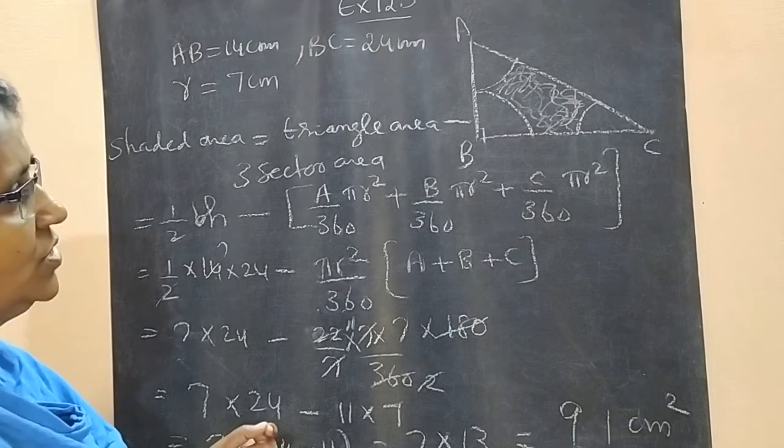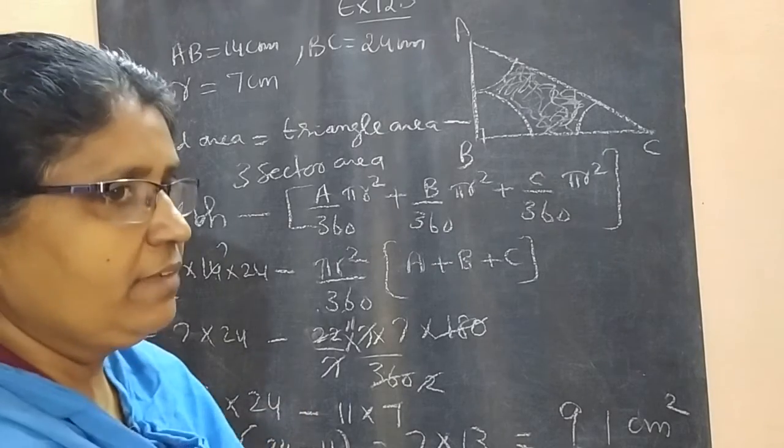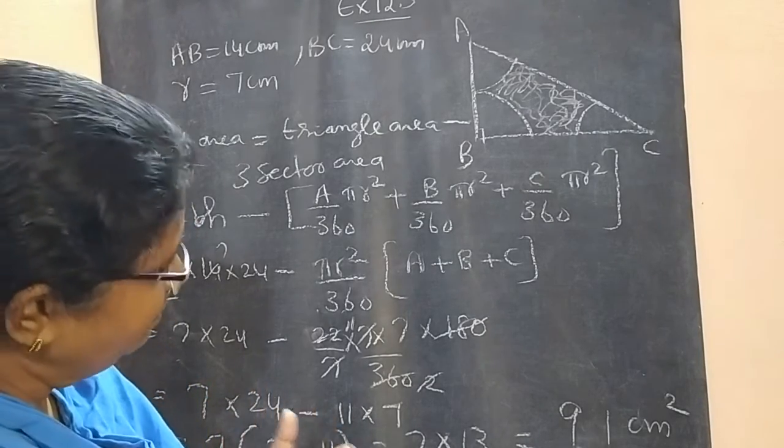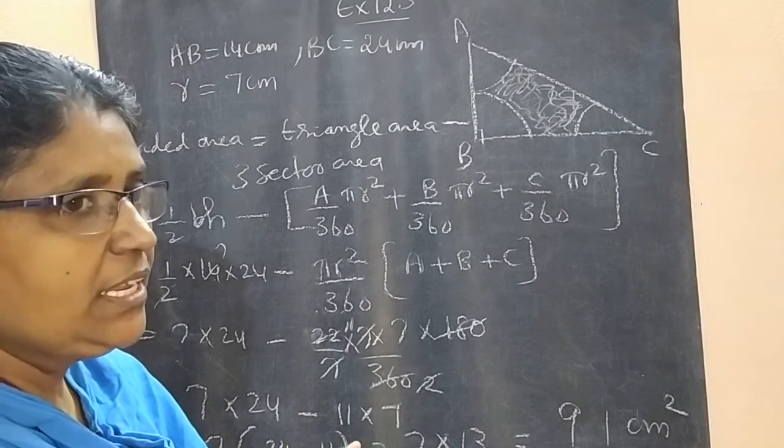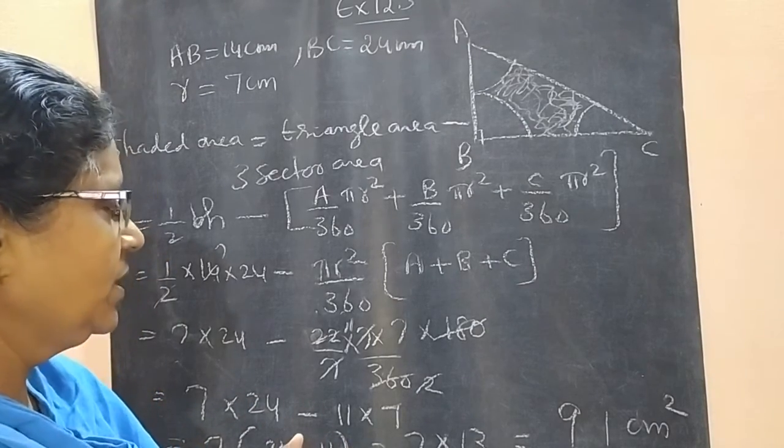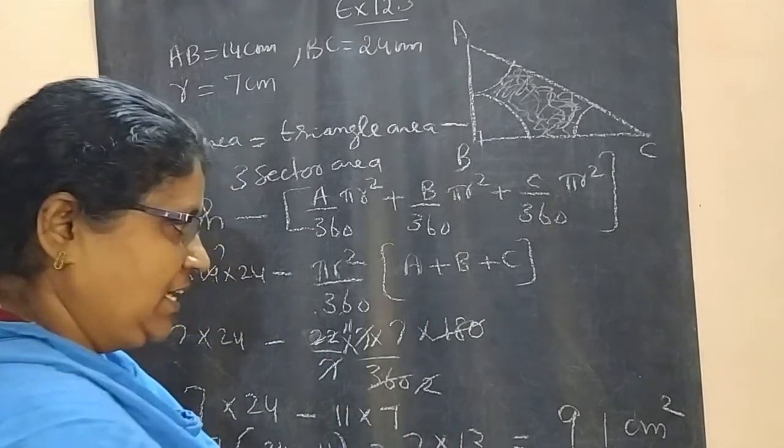91 centimeter square. So in this particular question, the sectors angles are not given but here 3 particular sectors are there. Its angle sum is 180 by using angle sum property. So, instead of A plus B plus C, we can put 180.